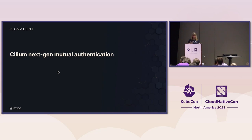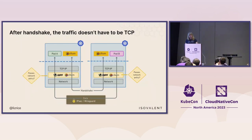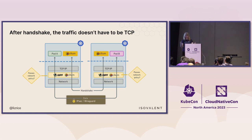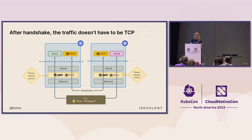That is Cilium's next-generation mutual authentication. There are a couple of other things to note. The handshake is happening independently of the traffic that it then permits. Although the handshake starts with a TCP connection between the Cilium agents on the two nodes, it doesn't have to be TCP for the traffic subsequently permitted between those endpoints. If you're using mTLS today in a service mesh, it will only let you authenticate and encrypt TCP traffic. Whereas with this approach, we can authenticate any traffic that goes over IP using this handshake, and then encrypt anything over IP using IPsec or WireGuard.